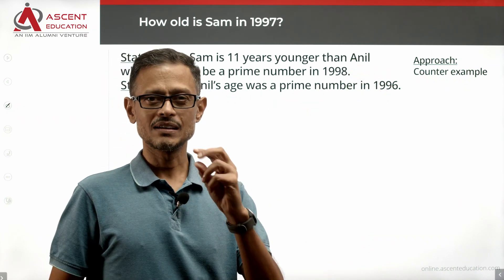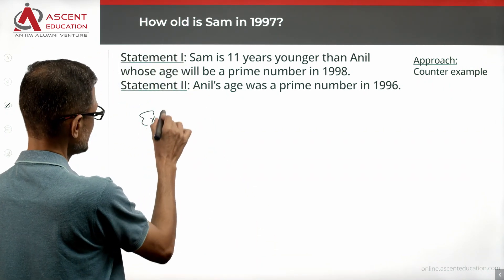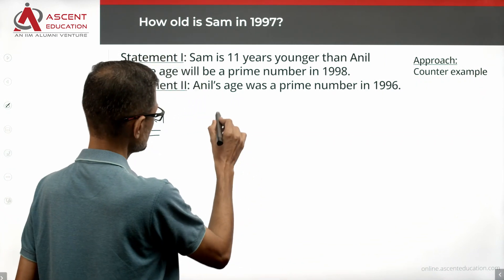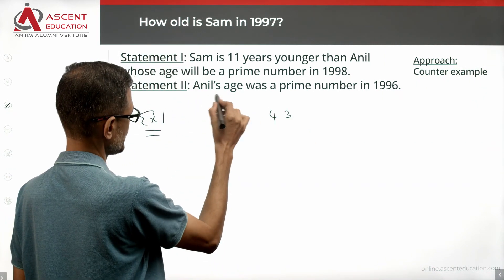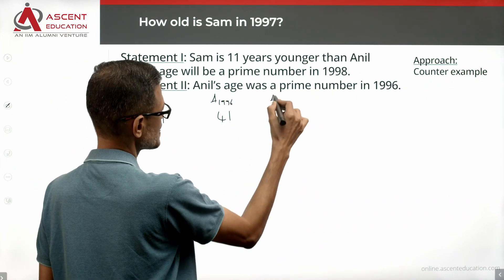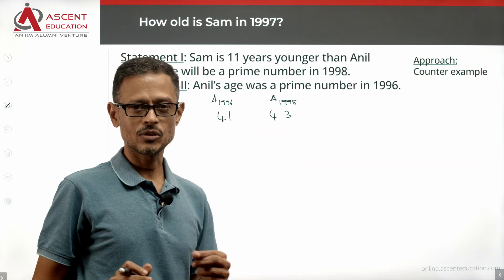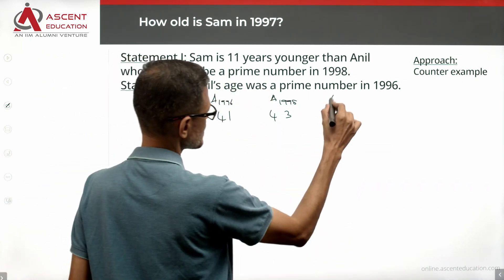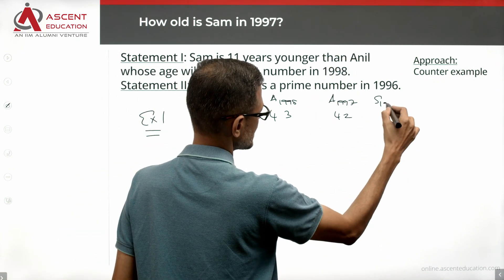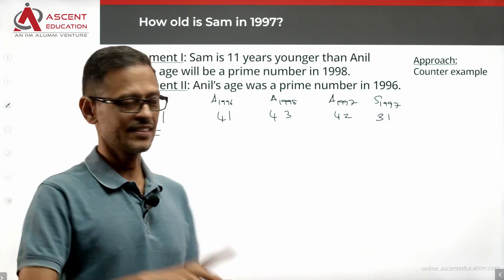I'm looking at a counter-example. If more than one value exists, the data is not sufficient. I'm writing out values for Anil's age in 1996 and 1998. Consider 51 and 53 — both prime. Anil's age in 1997 would have been 52, and Sam's age in 1997 is 11 less than this, which gives 41. Let's check whether these are the only two such numbers.